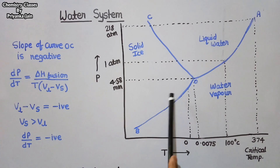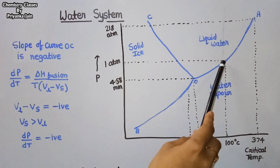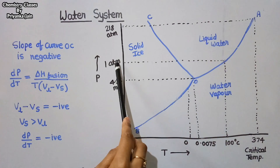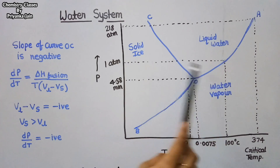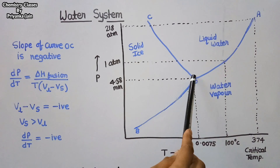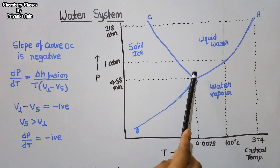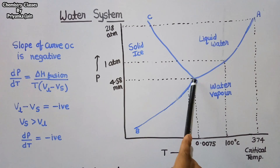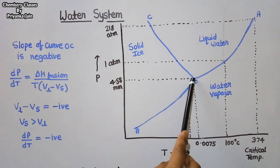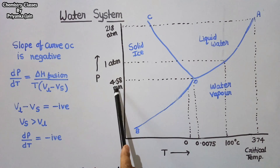At 100°C the vapor pressure of water is 1 atmosphere, showing the boiling point of water. There is a point O where all three phases — solid, liquid, and vapor — are in equilibrium; this is the triple point of water. The triple point occurs at a particular temperature of 0.0075°C and a pressure of 4.58 mmHg.